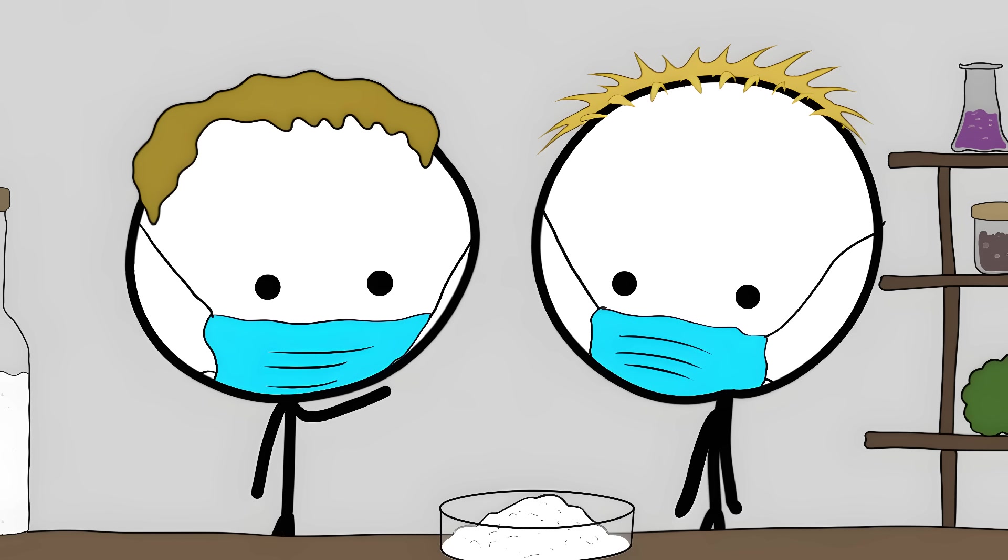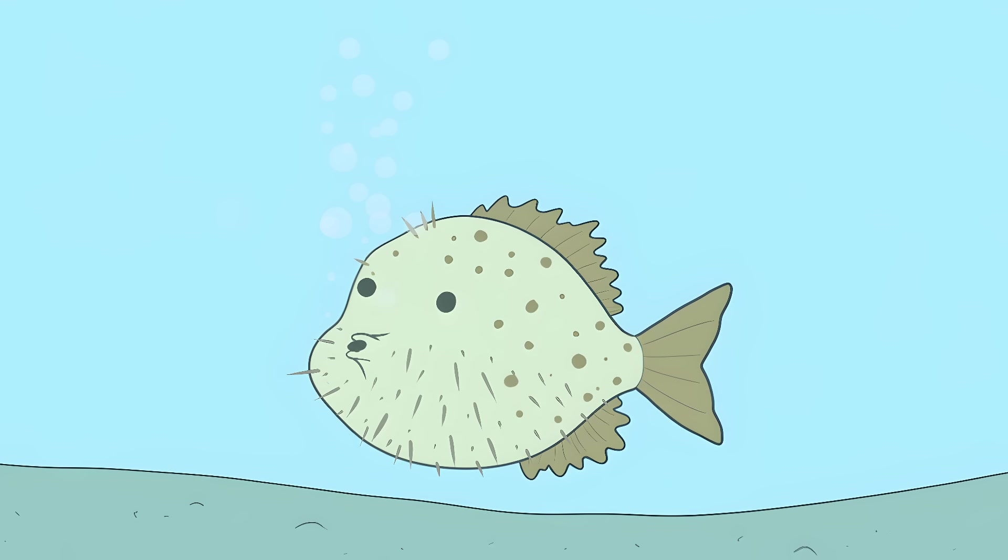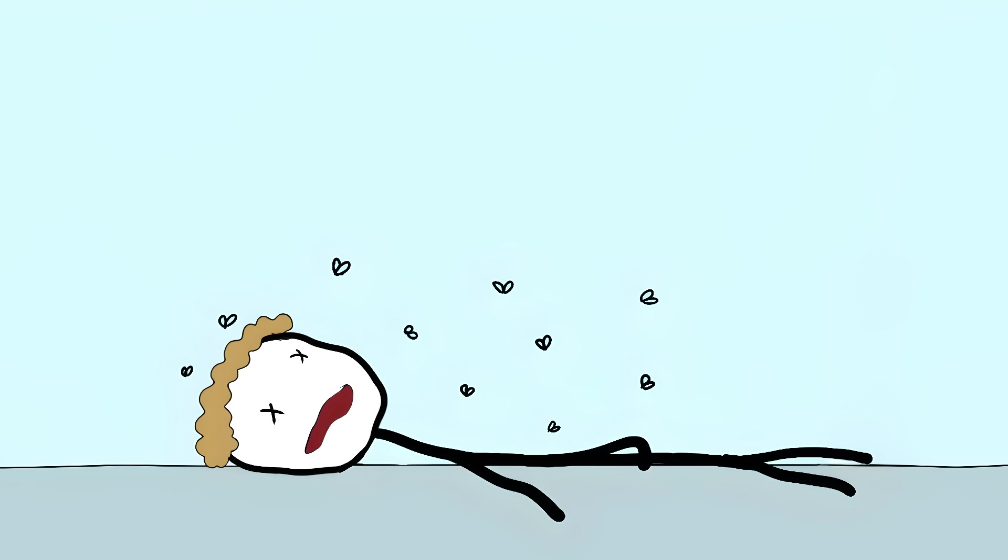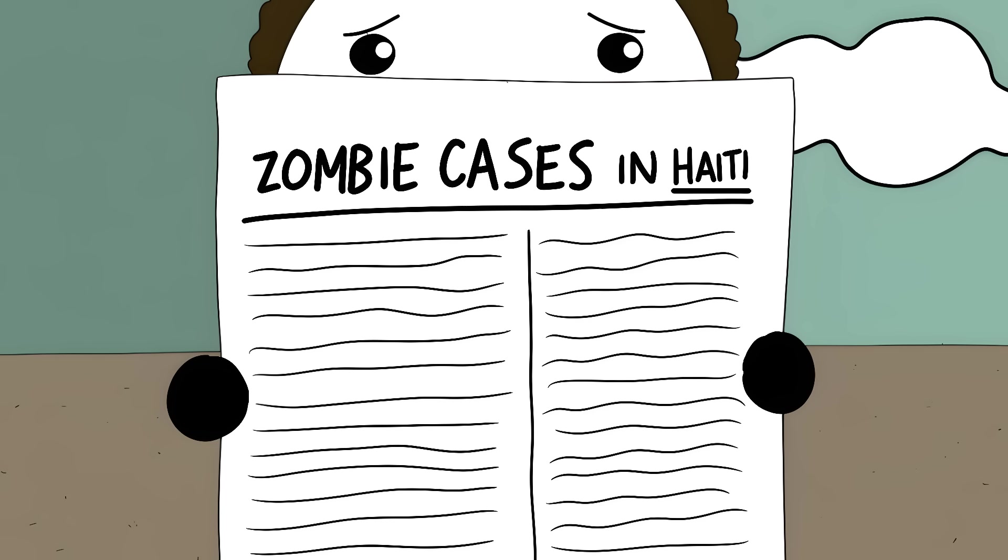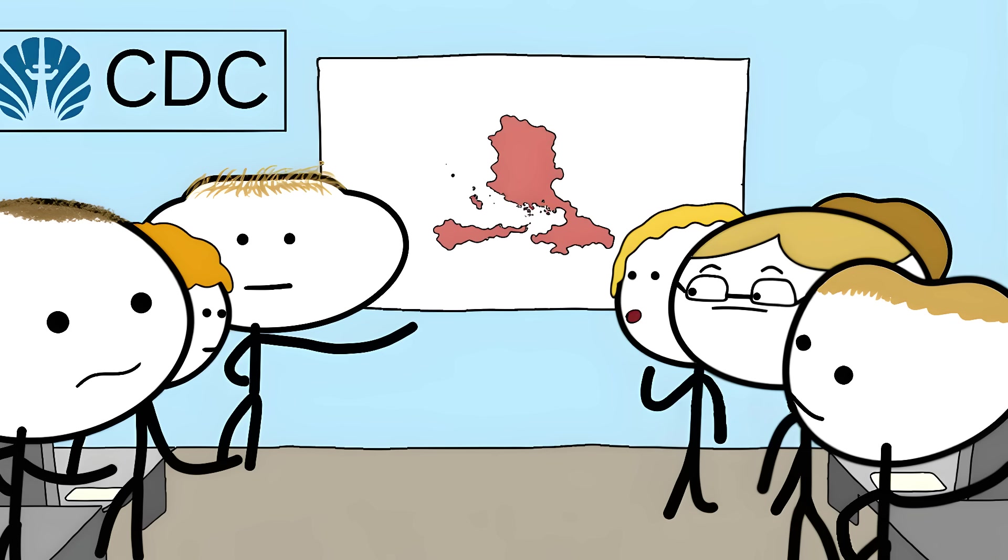Scientists studied this zombie powder in the 1980s. They found it contained tetrodotoxin, the same poison found in pufferfish. In tiny doses, it can make someone appear dead while their mind stays active. And since it's made from natural ingredients that are easy to get, there's no way to stop it. Cases of zombification still pop up in Haiti today. The CDC actually has plans for this specific scenario because they know this isn't just folklore.